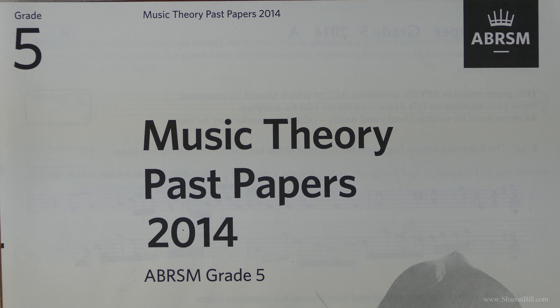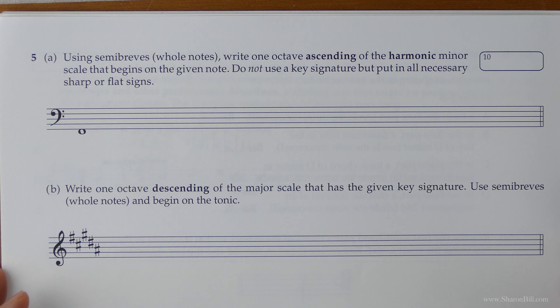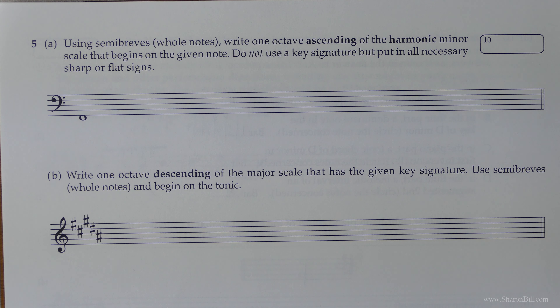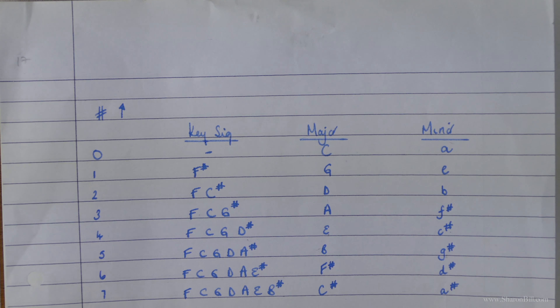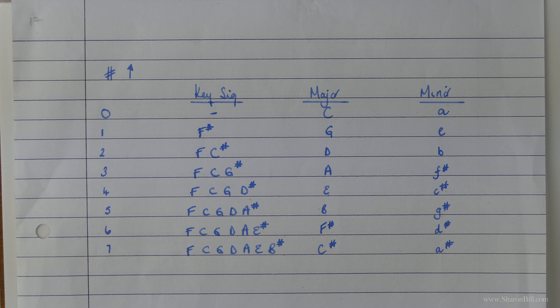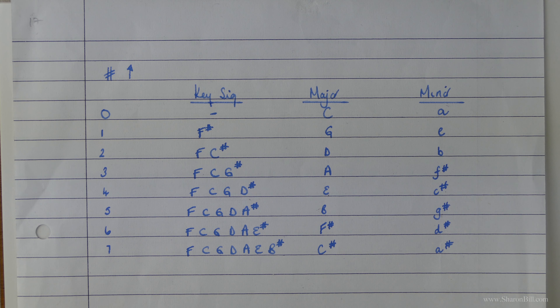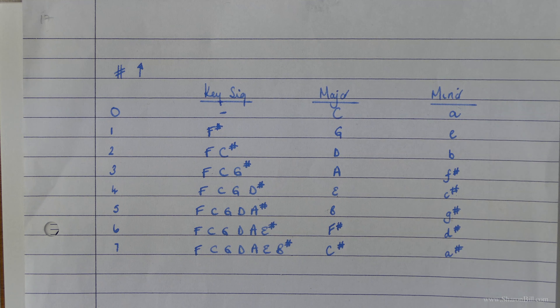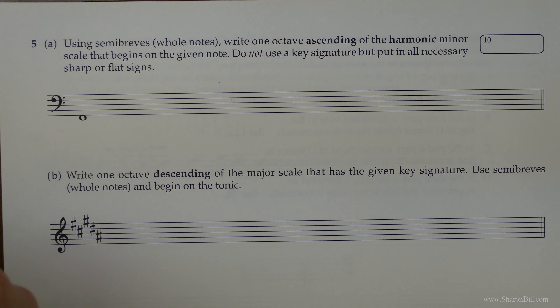Now we're going to complete the final questions of the 2014 Grade 5 Paper A. Turn to page 6 — we're starting on question 5. This is just a nice easy question of writing out some scales — an easy 10 marks if you get your thinking in order. Before you start the paper I always write out the circle of fifths: all the keys major and minor. That's all the thinking done in one go, nice and stress free. If you're not sure how to do that quickly I have a video tutorial on the circle of fifths — you'll find the link in the description and in the cards.